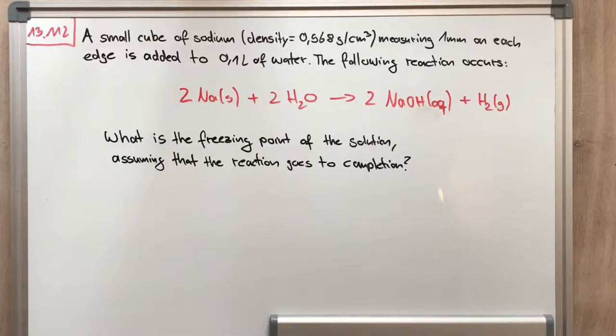A small cube of sodium with a density of 0.968 grams per cubic centimeter measuring one millimeter on each edge is added to 0.1 liter of water.